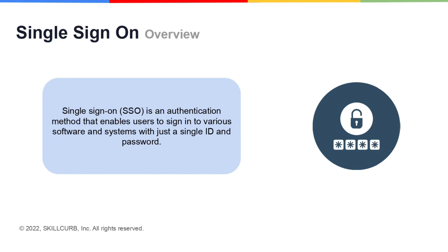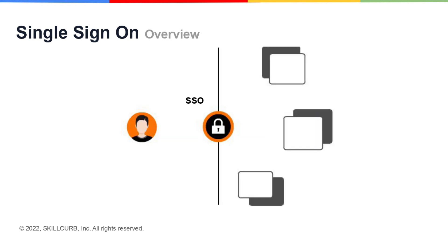Single Sign-On, or SSO, is an authentication method that enables users to sign into various softwares and systems with just a single ID and password. SSO allows IT departments to administrate a single identity that can access many machines and cloud services. Login for SSO is seamless, where a user once logs into their primary directory, as soon as they utilize this software they are presented with a login screen.